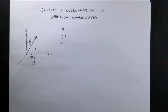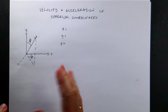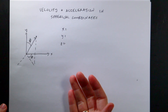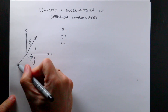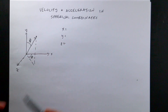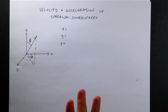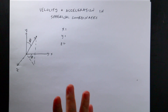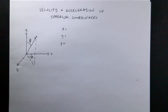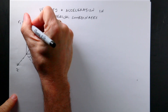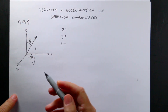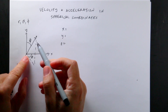Spherical coordinates are a different way to describe the location of an object. There is some disagreement in the way we describe this. The three coordinates we're going to use are r, theta, and phi. Now r is the distance from the origin to the point — not everyone agrees here.